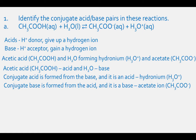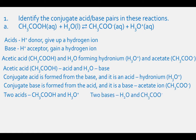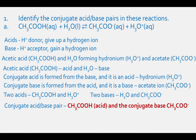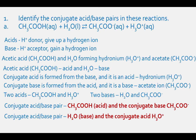There are two acids in this reaction equation: acetic acid CH3COOH and the hydronium ion H3O+. There are two bases: H2O and the acetate ion CH3COO-. One conjugate acid-base pair is acetic acid CH3COOH and the acetate ion CH3COO-, which is the conjugate base. The other conjugate acid-base pair is water, which is the base, and the hydronium ion H3O+, which is the conjugate acid.